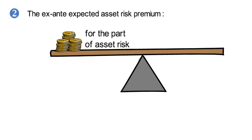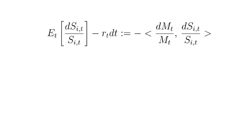The second important property of an arbitrage-free asset market is that the ex-ante expected asset risk premium is an equilibrium compensation for that part of asset risk that co-moves with innovations in the SDF, and only that part. Now mathematically, it means that the conditional expected value of ds over s minus rt dt, so that's the ex-ante expected risk premium of asset i, that needs to be the same then minus the instantaneous covariation of innovations to the SDF and innovations in the stock return.